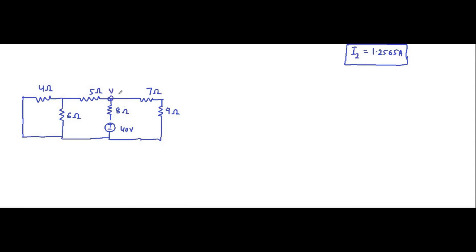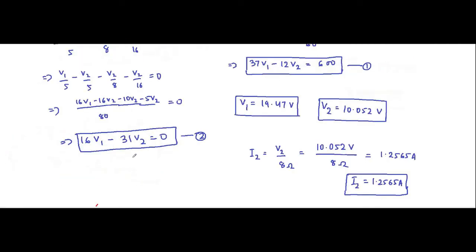We again find the currents. Let us call the node voltages V1 and V2. Let this current be i dash, this one be i1 dash, this current be i12 dash, and this current be i3 dash. Our objective is to find i3 dash, the current flowing through the 4 ohm resistor.